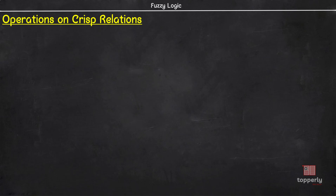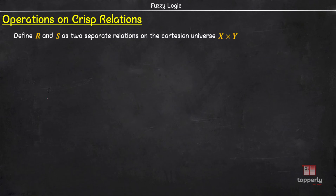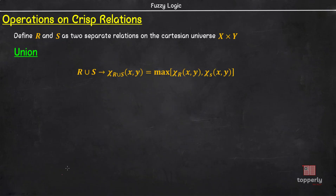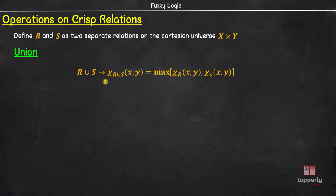First, let us learn about operations on crisp relations. Consider two relations R and S defined on the Cartesian universe X cross Y. Then, for the union operation between R and S, the membership value of each ordered pair (X, Y) in R union S is given by maximum of Chi_R(X, Y) and Chi_S(X, Y). Note that here Chi represents the crisp membership value.